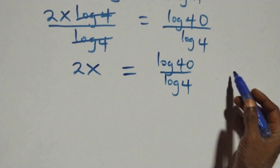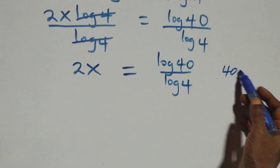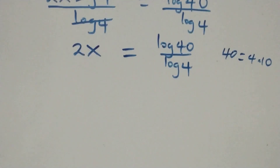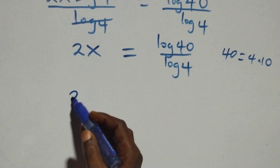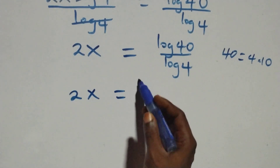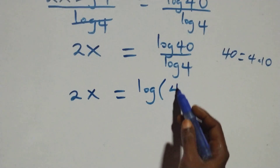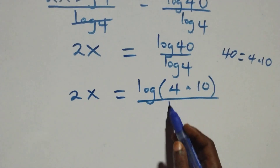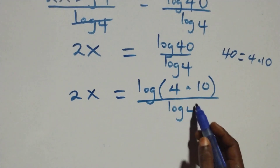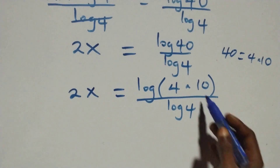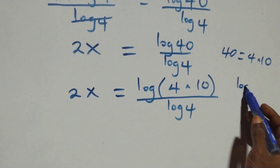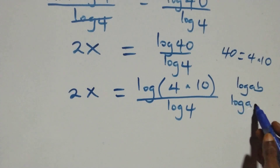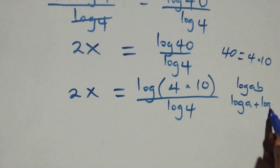Then, from here, we divide both sides. This becomes 2x equals log(4 × 10) over log 4. And here, this follows the law of logarithms: when we have log(A × B), this is the same thing as log A plus log B.